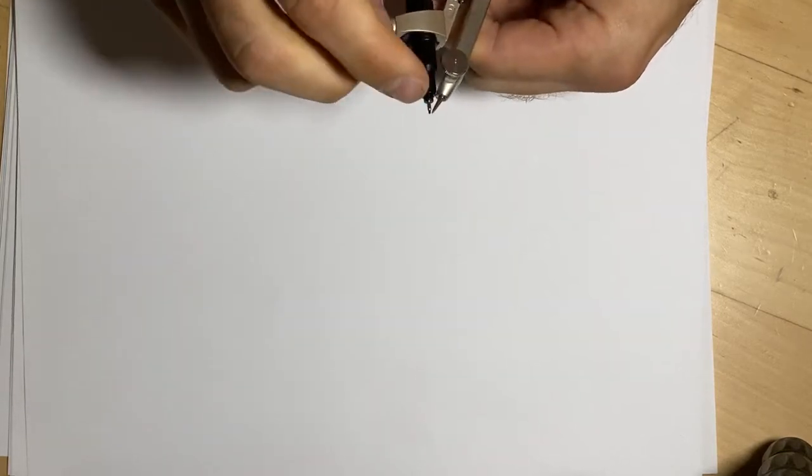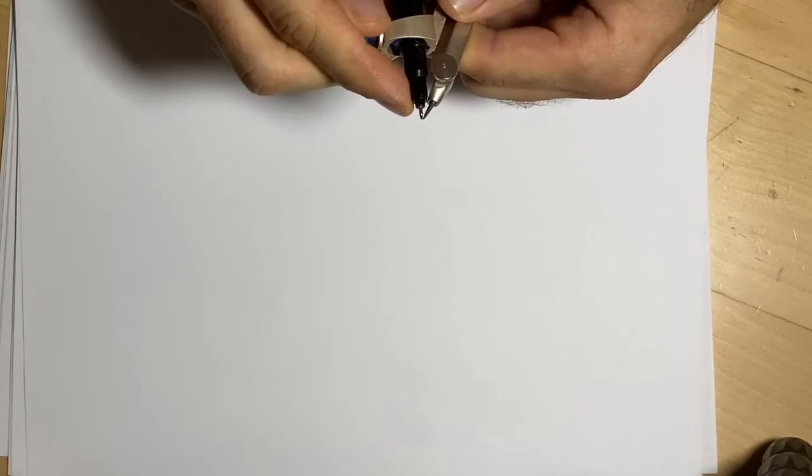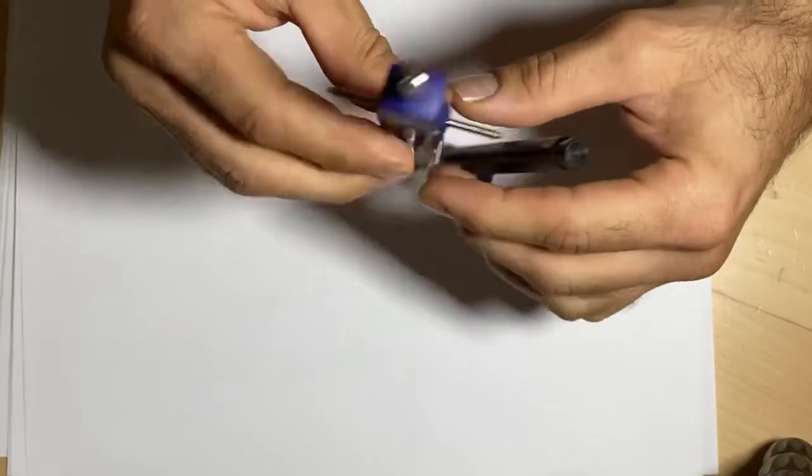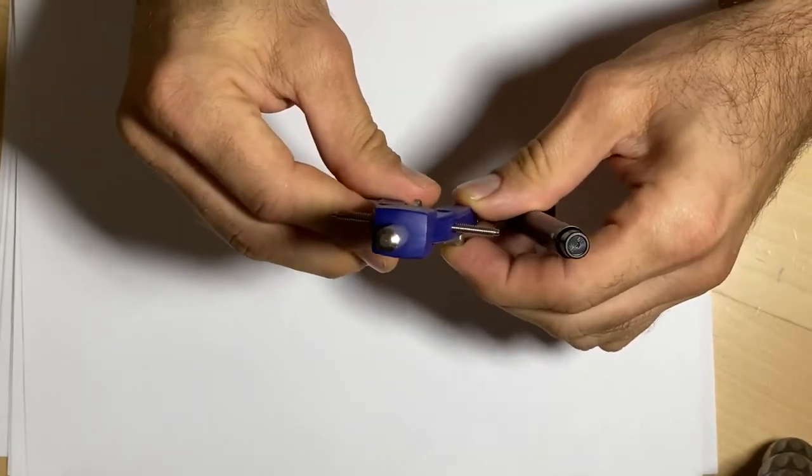You want to line up your compass point with the point of your pencil or pen. I'm going to try to use pen here so that you can see a bit more clearly. We're going to be drawing what we call the seed of life.